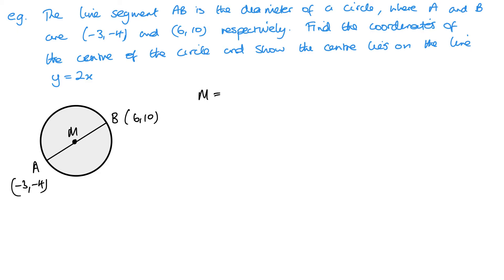So, if I call this M, M is going to be adding my two x values together, minus 3 plus 6, and then dividing by 2. And my y's, minus 4 plus 10, divided by 2. So, that gives me 3 over 2 and 3. So, my midpoint is 1.5, 3, or 3 over 2 and 3.